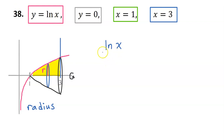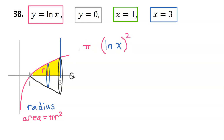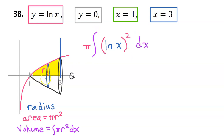To find the volume, we analyze a single slice in the shape of a disc. Step one: the radius stretches from the x-axis up to the red function, so the length of the radius is natural log x. Step two: the area of a disc is always pi r squared. Since this is the radius, we square it and put pi out in front. Step three: all of the discs are stacked up from left to right, so we integrate with respect to x, specifically from 1 to 3.